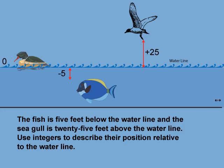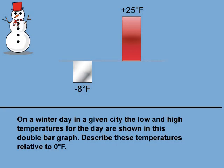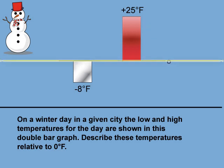Let's look at a final example. On a winter day in a given city, the low and high temperatures for the day are shown in this double bar graph. Describe these temperatures relative to 0 degrees Fahrenheit. In previous examples, you saw how integers can be used for counting and for measurement. In this example, we look at data written in integer format. This double bar graph shows two different temperatures in integer format. Let's analyze these data points. The horizontal line represents 0 degrees Fahrenheit. So this bar represents a temperature of 25 degrees above 0, and this temperature represents 8 degrees below 0.